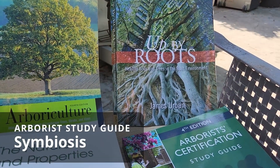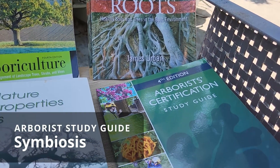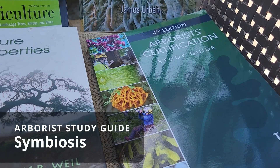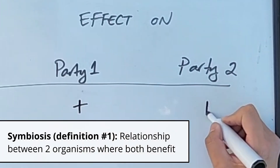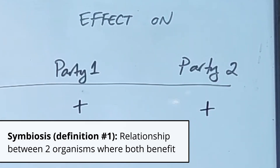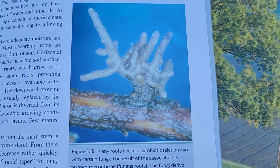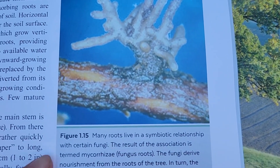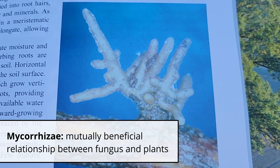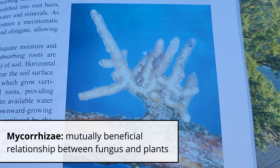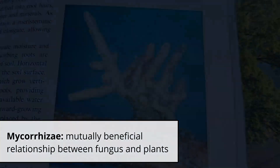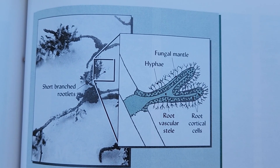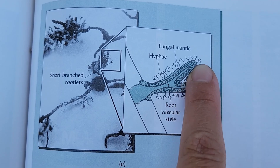This video is about symbiosis. According to a lot of reference books that I looked at, including the certification guide, symbiosis is a relationship between two organisms where both of them benefit. An example would be mycorrhizae, which I'll cover in more detail in a separate video. Essentially, mycorrhizae is a mutually beneficial relationship between specific types of fungi and trees — the fungi get resources for the trees, and the trees give them sugars or food.